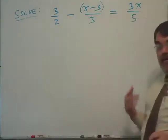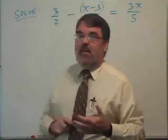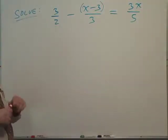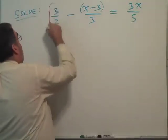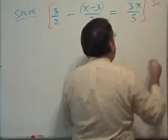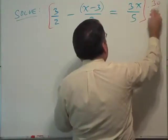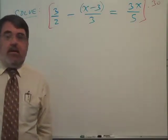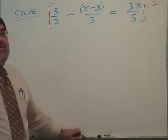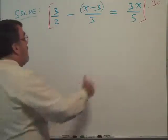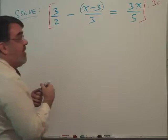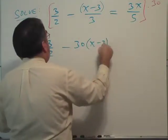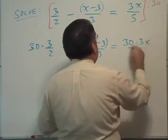Now, we decided that 30 is a good number to work with here. Why is that? Because 30 is the smallest number in which 2, 3, and 5 will all divide into nice and neatly. So I'm going to multiply by 30, that's 30 over 1. We're multiplying by 30 and we can multiply an entire equation by a number. We're going to distribute. Every term gets multiplied by 30. So that gives me 30 times 3 halves minus 30 times x minus 3 over 3 equals 30 times 3x over 5.